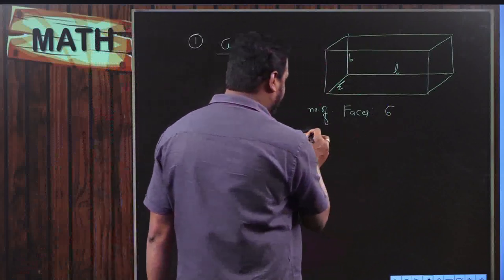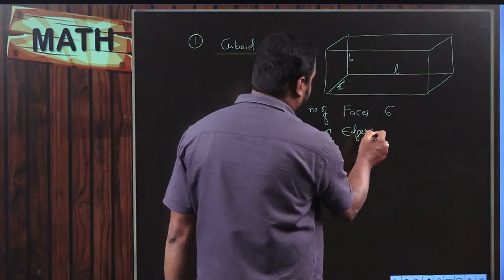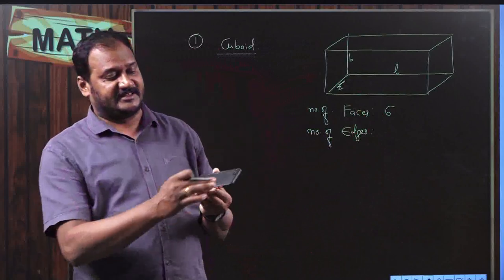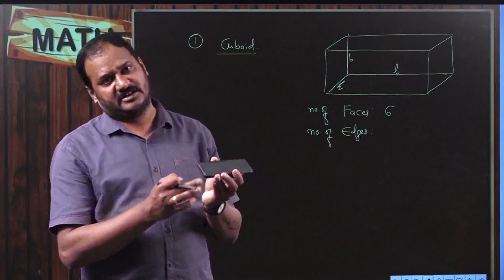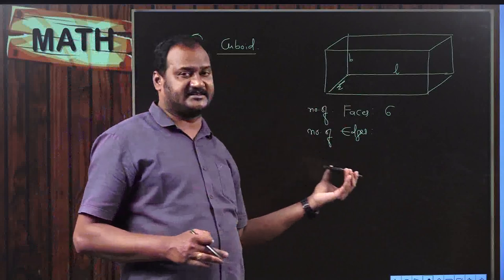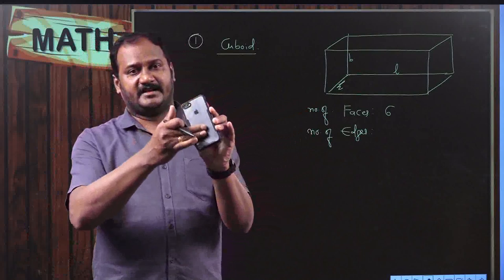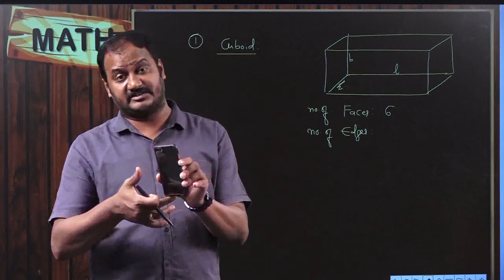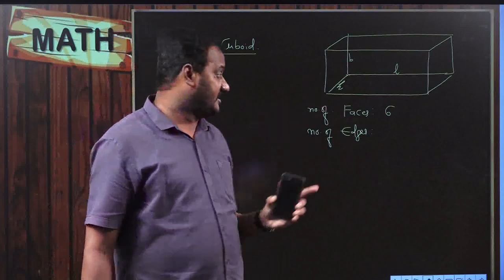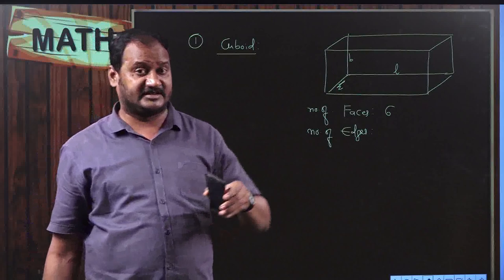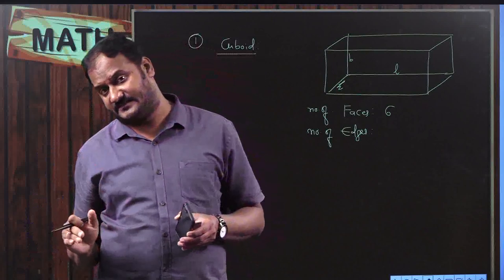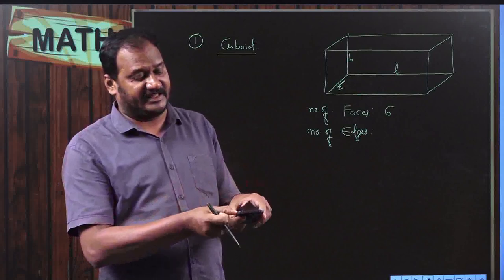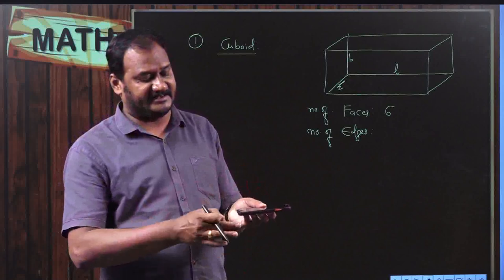The number of faces is six. Now, how many edges are there? An edge is the combination of two different faces. For example, I have my mobile phone — this mobile is in the shape of a cuboid because length is not equal to width and not equal to thickness. Counting the edges: first, second, third, fourth, fifth, sixth, seventh, eighth, ninth, tenth, eleventh, twelfth — so there are totally 12 edges for a cuboid.